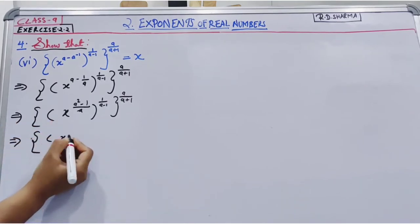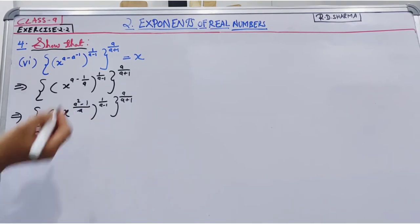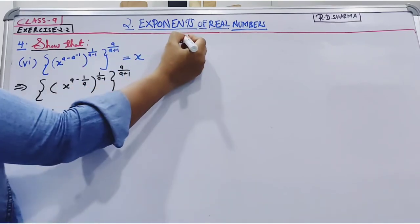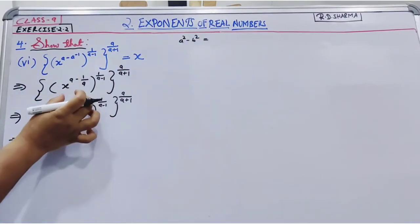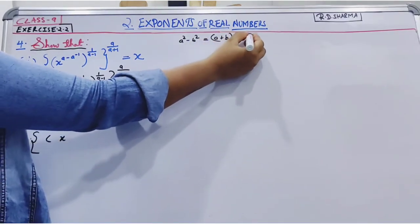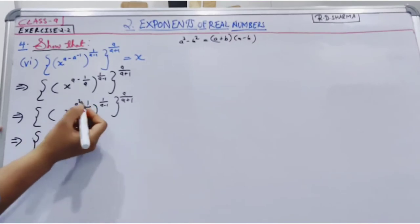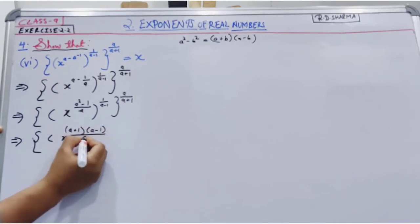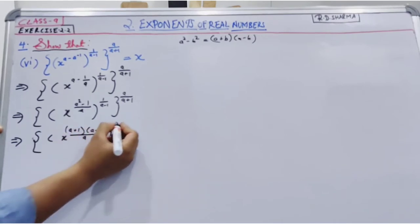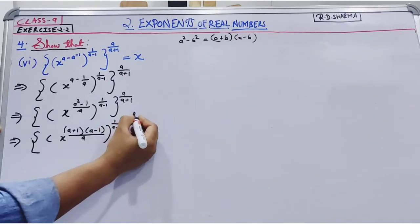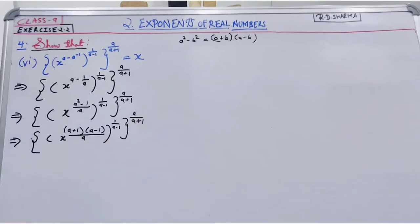Now x to the power a square minus 1, so we can write this one is a and this one is b. So a square minus b square form, we can write this like a plus b and a minus b, to the power 1 divided by a minus 1 and to the power a, a plus 1.